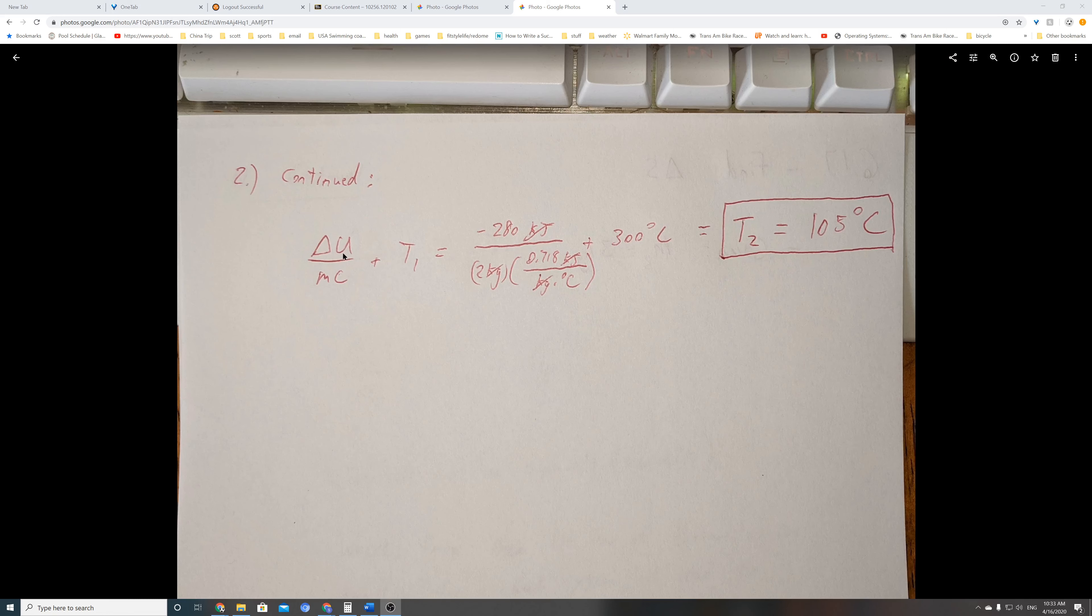Now we have a value for Delta U. Our change in internal energy is minus 280 kilojoules over M times C. Make sure you have it in the right units. Kilojoules cancel out, kilograms cancel out, and what you're left with in the denominator is one over degrees C. Multiply both numerator and denominator by degrees C, so it cancels in the denominator and the numerator now has degrees C. We perform the calculation and come up with negative 195 degrees C.